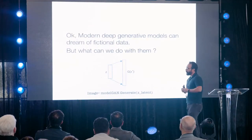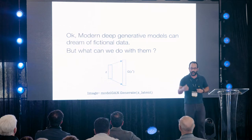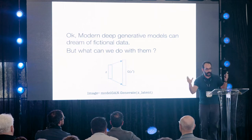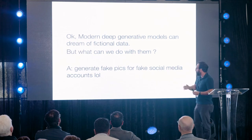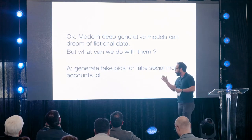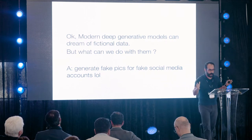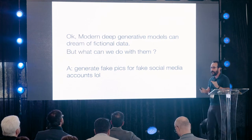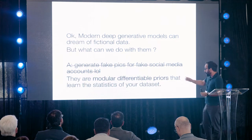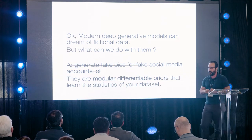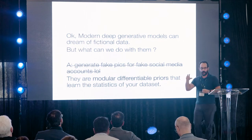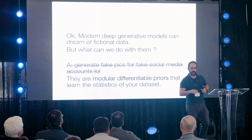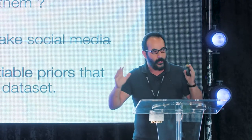My question a few years back was: we can build neural networks imagining things that look real and have the statistics of real data, but it doesn't do anything useful. Can we do something useful? The silly answer is generating fake pictures for fake LinkedIn accounts. But my main message is: if you can train a generative model, that's an incredibly powerful modular, differentiable prior that knows the statistics of your data, and you can use it for a million useful things — not just generate fictional data.